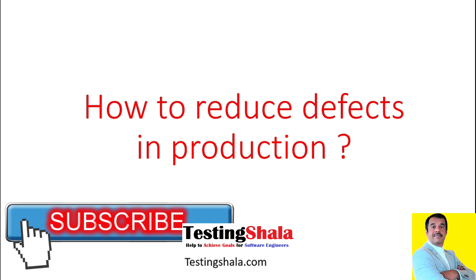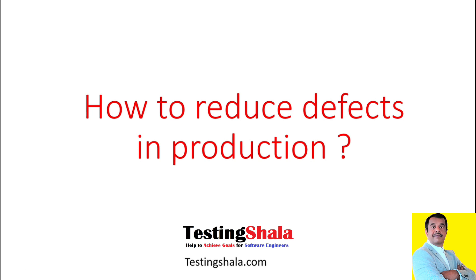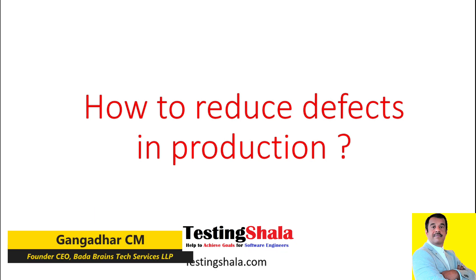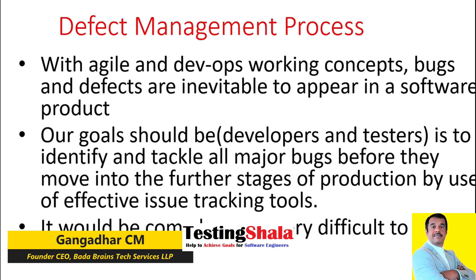That is the key goal for every person in the software development lifecycle, because defects in production would give a bad image or a bad name to any organization. So we will try to understand what are the various things we should do in order to reduce the defects which land up in production.